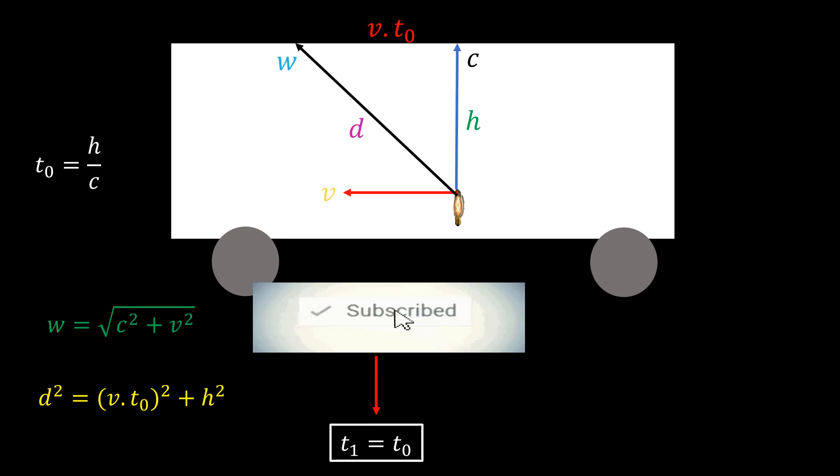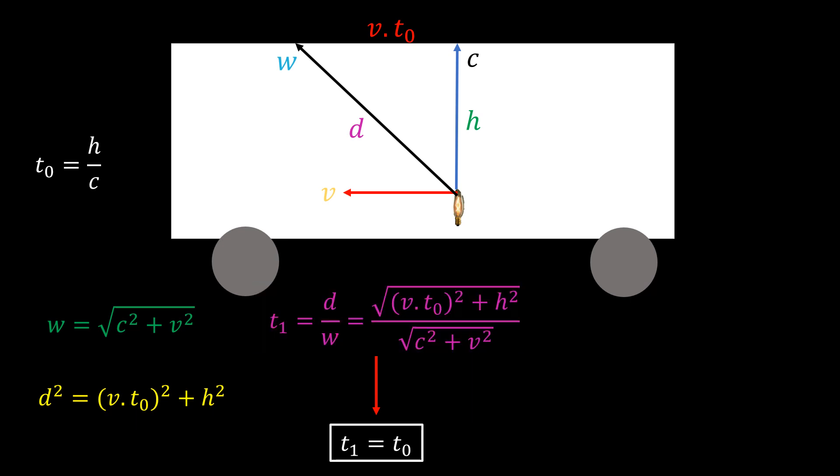This expression can be simplified to t1 equal to t0. So, the only condition in which the observer outside the bus will see the light hit the roof at the same time as the observer inside the bus is if the bus increases the speed of the light. And this violates Einstein's first postulate that the speed of light is constant in all reference frames.